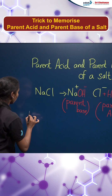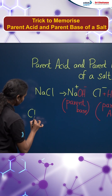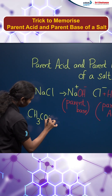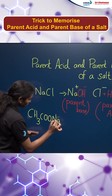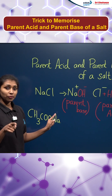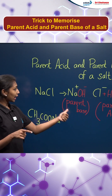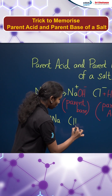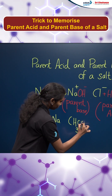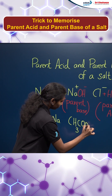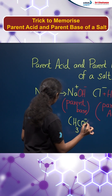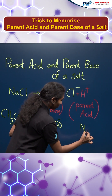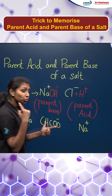Now let us take another example. If I am taking CH3COONa, the first step is to split it into cation and anion. So CH3COO- will be the anion and Na+ will be the cation.